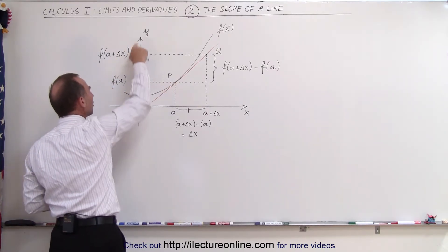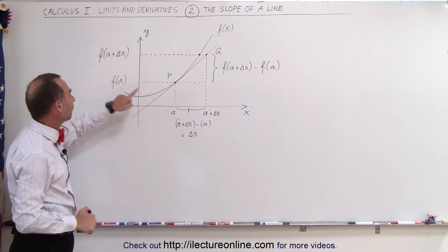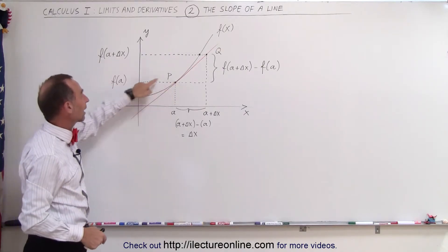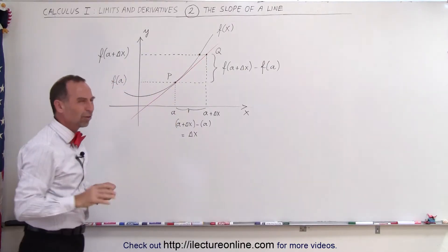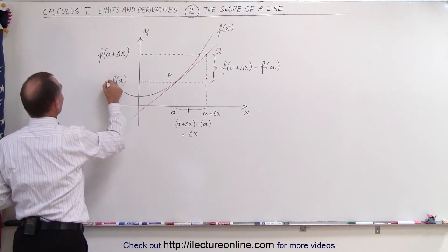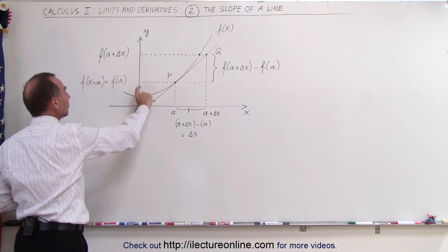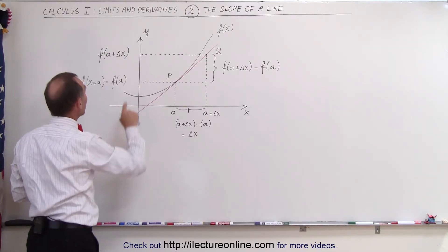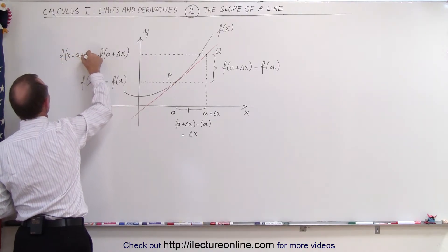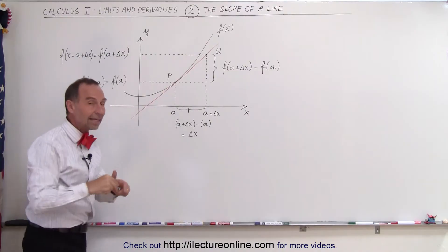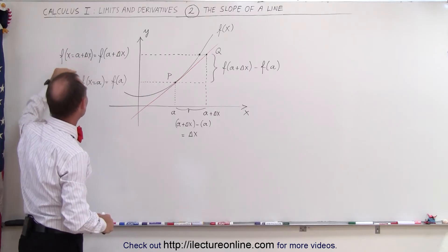This point right here is the height in the y direction of f of A. So if I plug in the value A for x and evaluate the function f of x, I get f of A at that location. Evaluating f of x at x equals A gives me f of A. You can write this as f evaluated when x equals A, meaning the function evaluated at that height. And the function evaluated when x equals A plus delta x can be written as f of x equals A plus delta x — you find that height by plugging A plus delta x in for x.